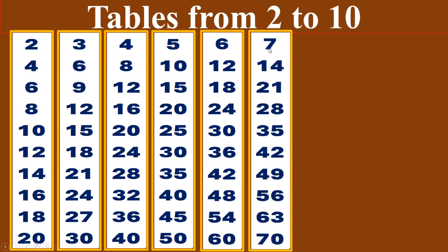Seven times table. Seven ones are seven. Seven twos are fourteen. Seven threes are twenty-one. Seven fours are twenty-eight. Seven fives are thirty-five. Seven sixes are forty-two. Seven sevens are forty-nine. Seven eights are fifty-six. Seven nines are sixty-three. Seven tens are seventy.